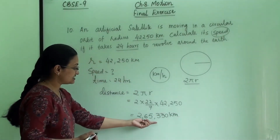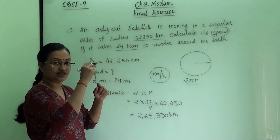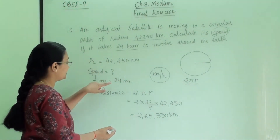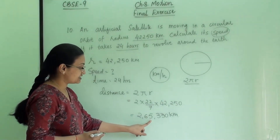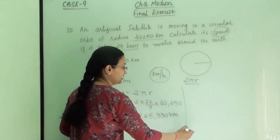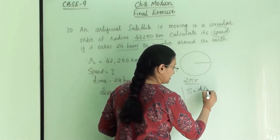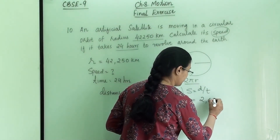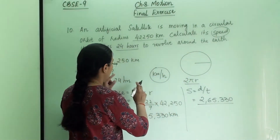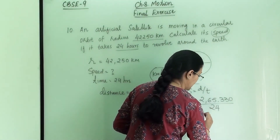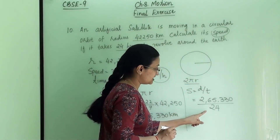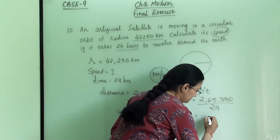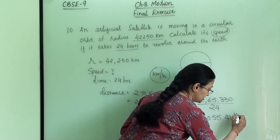So 265,330 km is the distance the satellite covers in 24 hours as it moves around the circular orbit. Now we find the speed: speed equals distance divided by time. Distance is 265,330 km and time is 24 hours. Dividing these gives a speed of 11,055.41 km per hour.